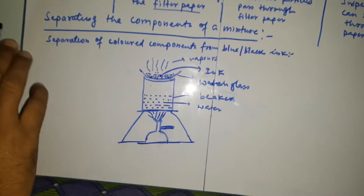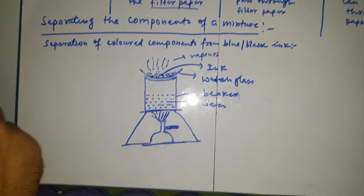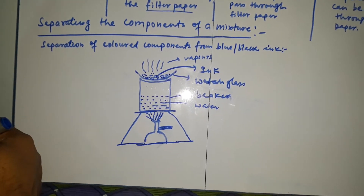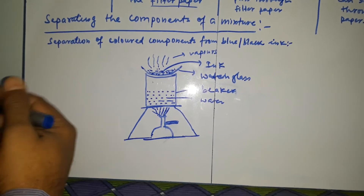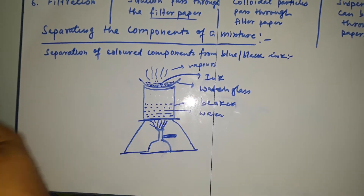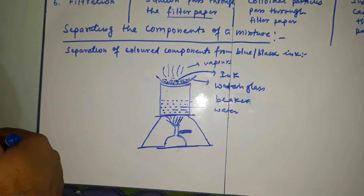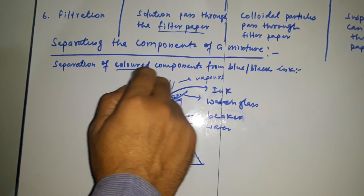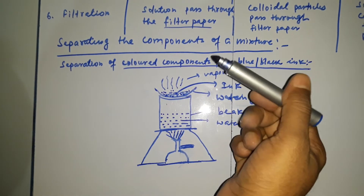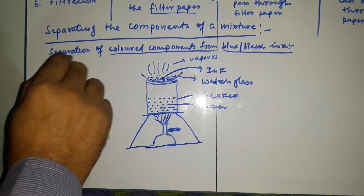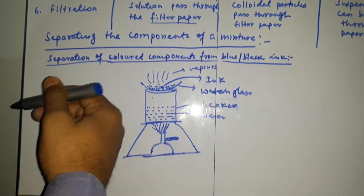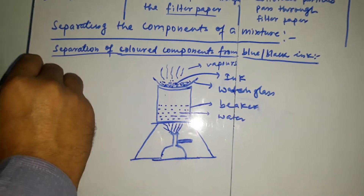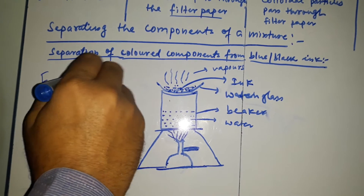As we have discussed, these all are mixtures, and there are some methods to separate their components. In some mixtures it is very easy — like separating peppers from rice or husk from grain using very common methods. But in some special cases we need special methods. Here we will separate the colored component from blue or black ink. The pen I am writing with also contains ink mixed in water, so we have to separate the ink from water. We will use a method called evaporation.